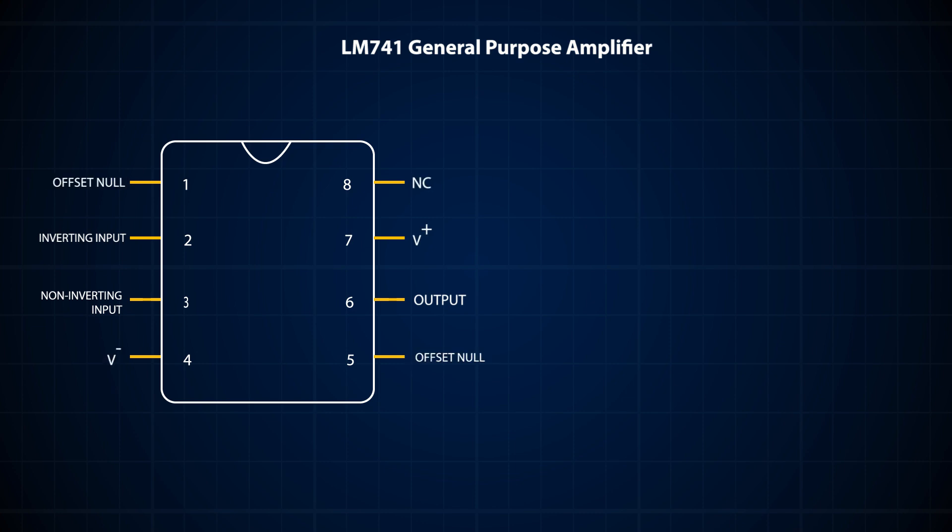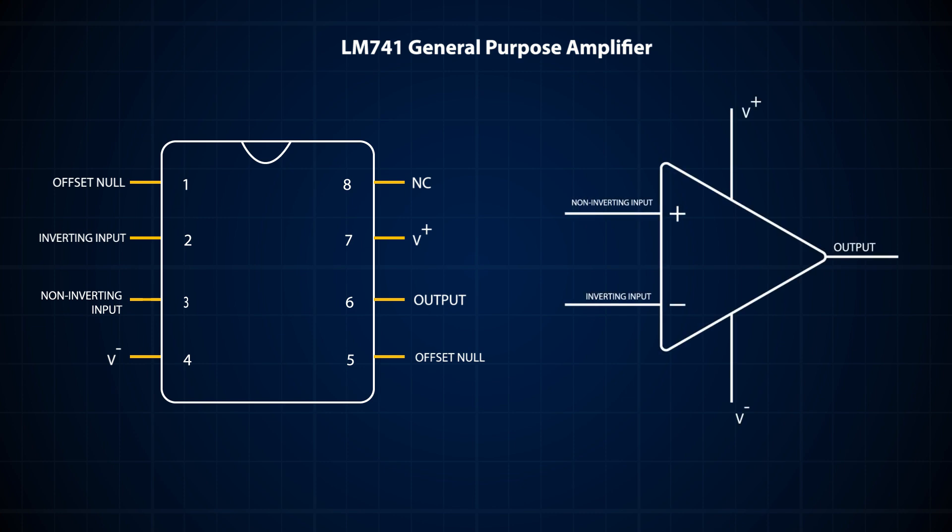The circuit diagram for an op-amp is simply a triangle showing the two inputs: the non-inverting input, shown by the plus sign, and the inverting input, shown by the minus sign. You can also observe the output and the two power supply terminals.